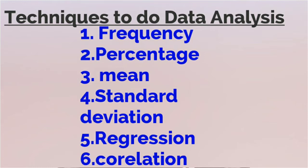The techniques for doing data analysis are: the first one is frequency. Frequency helps to know about the extent of preference. For example, those who have a social media account in the age group between 25 to 50 can be calculated using frequency.